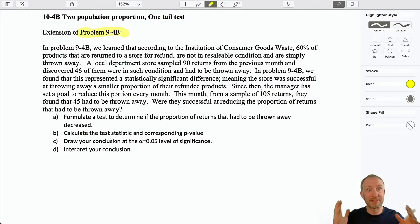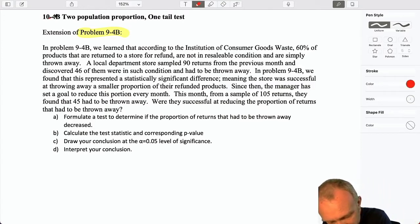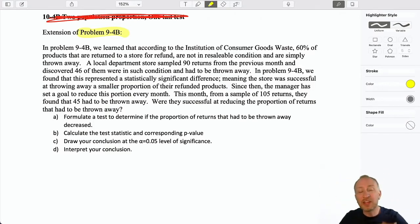We found that this represented a statistically significant difference, meaning that the store was successful. I'm referring back to problem nine, four B. The store was successful in throwing away a smaller proportion of their refunded products. Well, since then, the manager has set a goal to reduce this portion every month.